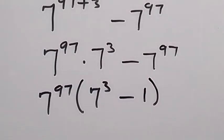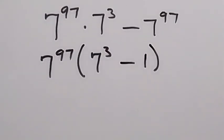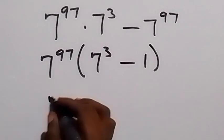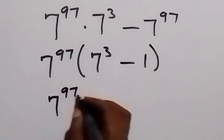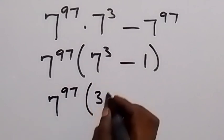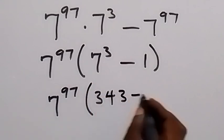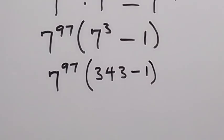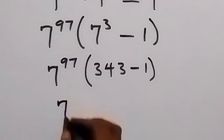Then also we can write 7 raised to power 3 as 343, so we have 7 raised to power 97 into bracket 343 minus 1. And then 343 minus 1 will give us 342, so we have 7 raised to power 97 multiplied by 342.